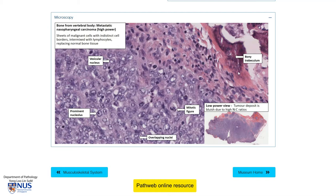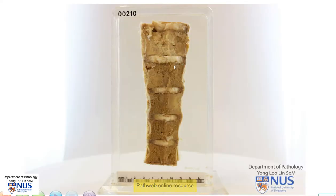Here we can see some of the bony trabeculae in the residual bone. In this patient, you can imagine that he may present with backache or even potentially compression fractures, so there may be pathological fractures on minimal trauma.